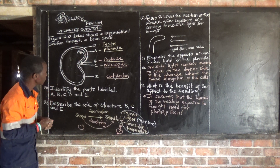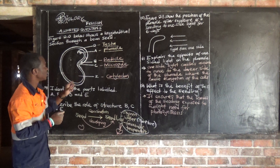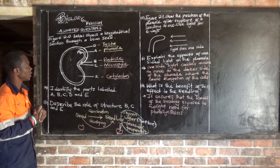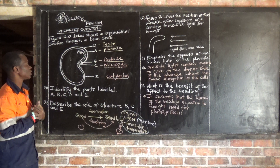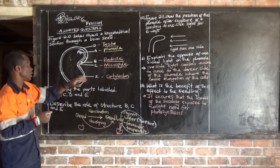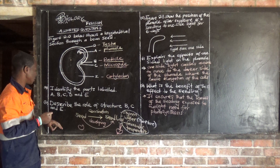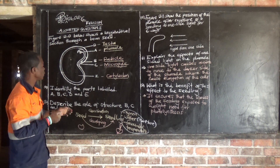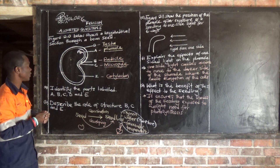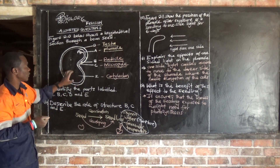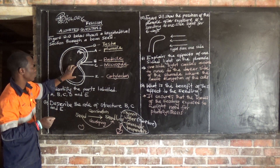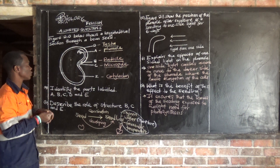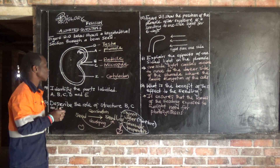So the function of B — B develops into the root system. Then C is just a pore where water passes through the micropyle and enters. Then E, the cotyledon — the cotyledon stores food and enzymes.